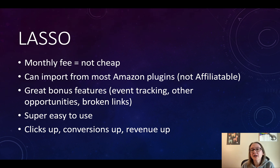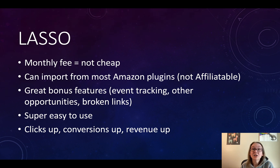Lasso also shows you if any of your affiliate links are broken or if products are out of stock. I actually use Genius Links across my sites and it also shows you when things are out of stock or broken, but I don't find it's very easy to use on Genius Links. It is super easy to use that feature on Lasso. In general, I found Lasso super easy to use, especially compared to Affiliate Table. Compared to AAWP, it was pretty similar in ease of use, though I'd say Lasso is just slightly easier.